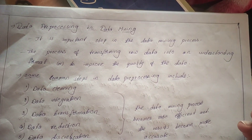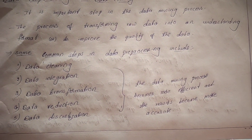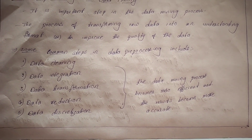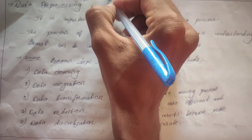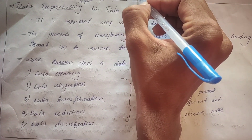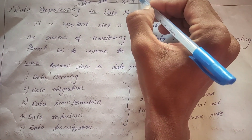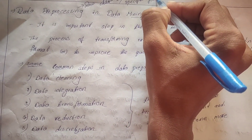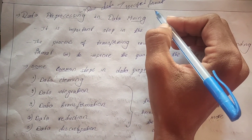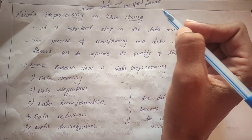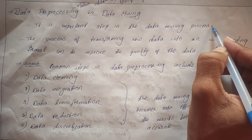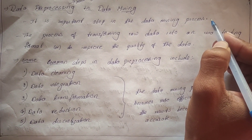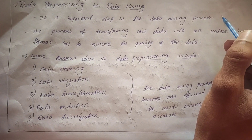Welcome back to my channel, The Machine Brain. Today we'll discuss data preprocessing in data mining. Preprocessing is used to convert raw data into a specified or understandable format for mining. It is a very important step in the data mining process.